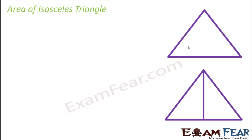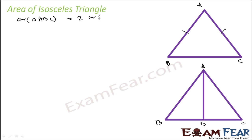Now let us find the area of an isosceles triangle using the same logic. Let ABC be an isosceles triangle. We can break it into two parts — since it is an isosceles triangle, the two parts will be congruent triangles. So the area of ABD will equal the area of ADC, and the overall area of triangle ABC will be nothing but twice the area of triangle ADC.